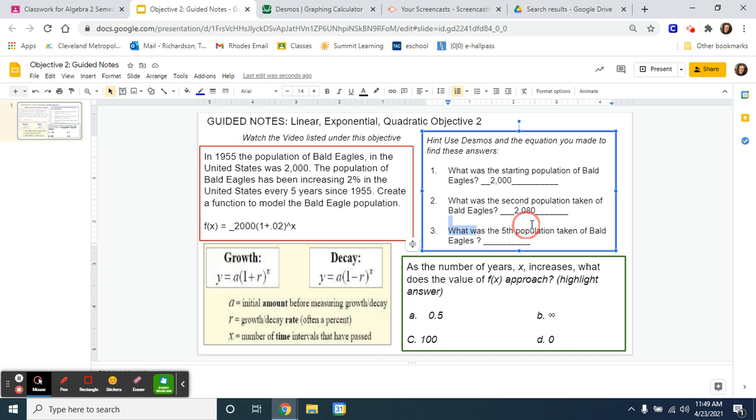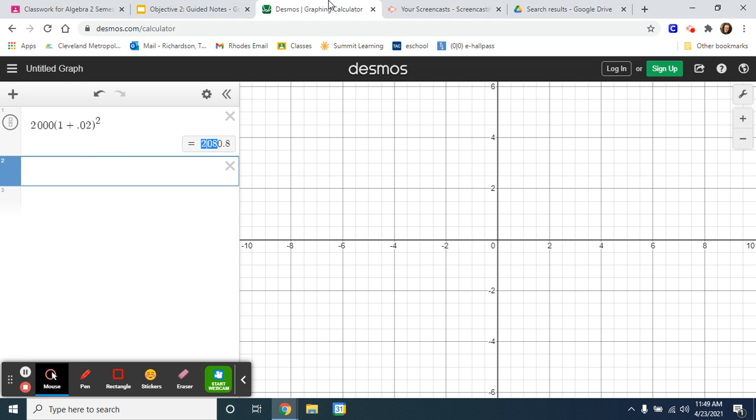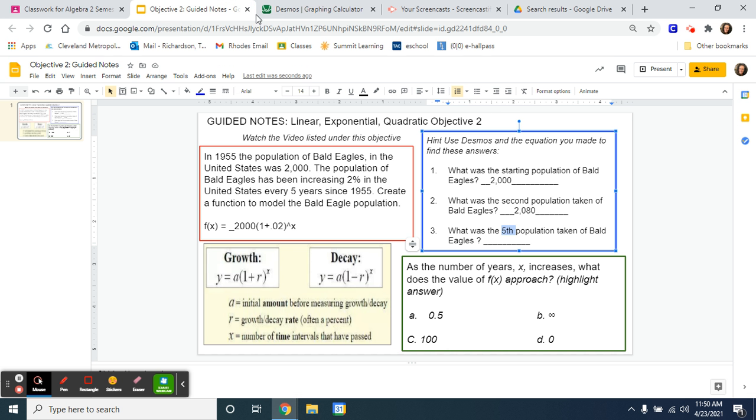Question three, what was the fifth population? It can ask you any population. Now we have an equation, we know how to use it. We have to just plug in whatever it's asking. We just did two. Now it's asking for the fifth population. It could ask you what's the 10th population, what's the 100th population. It doesn't matter. Just go to Desmos and change that exponent. Now I'm looking for five. Here we go, 2,208. Remember, we don't want this decimal. We're talking about eagles. We can't have parts of an eagle. So 2,208 is the amount of eagles taken on the fifth population.